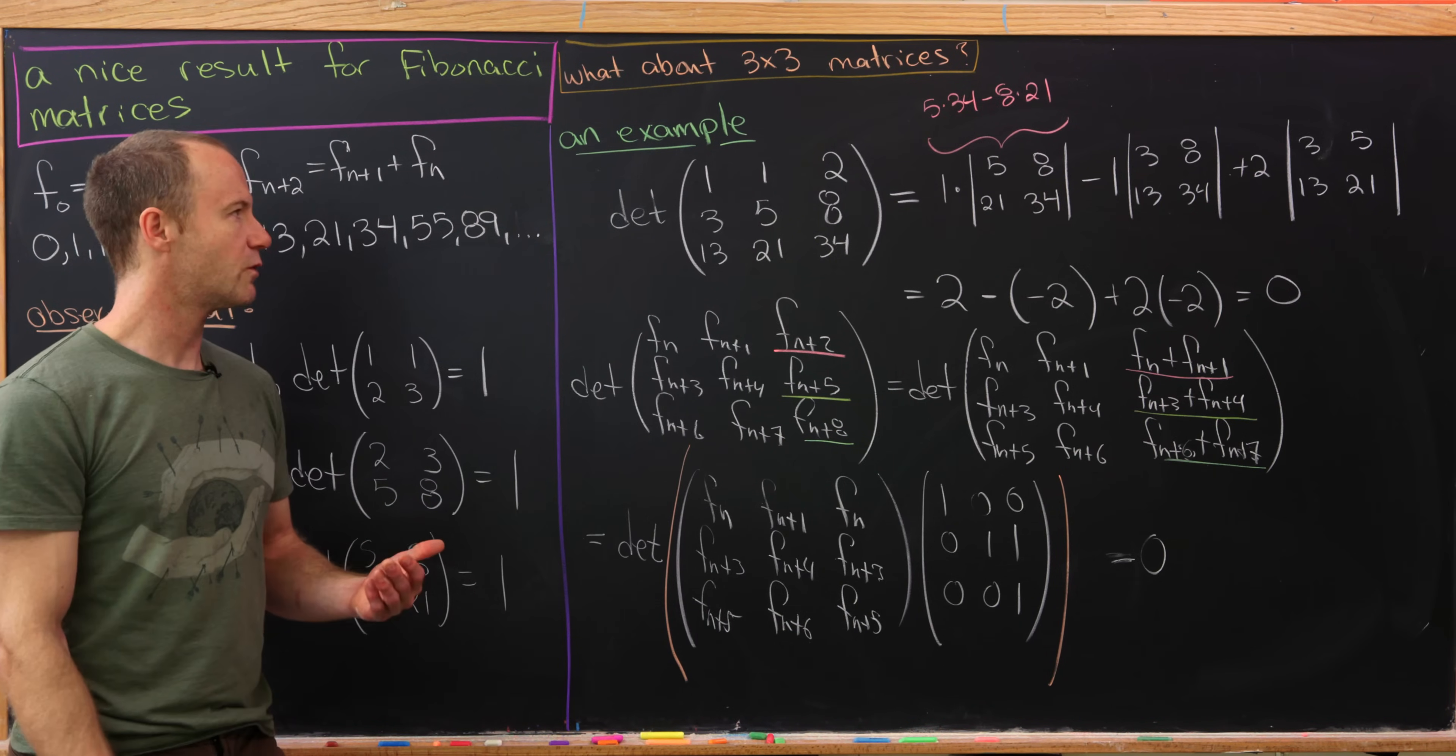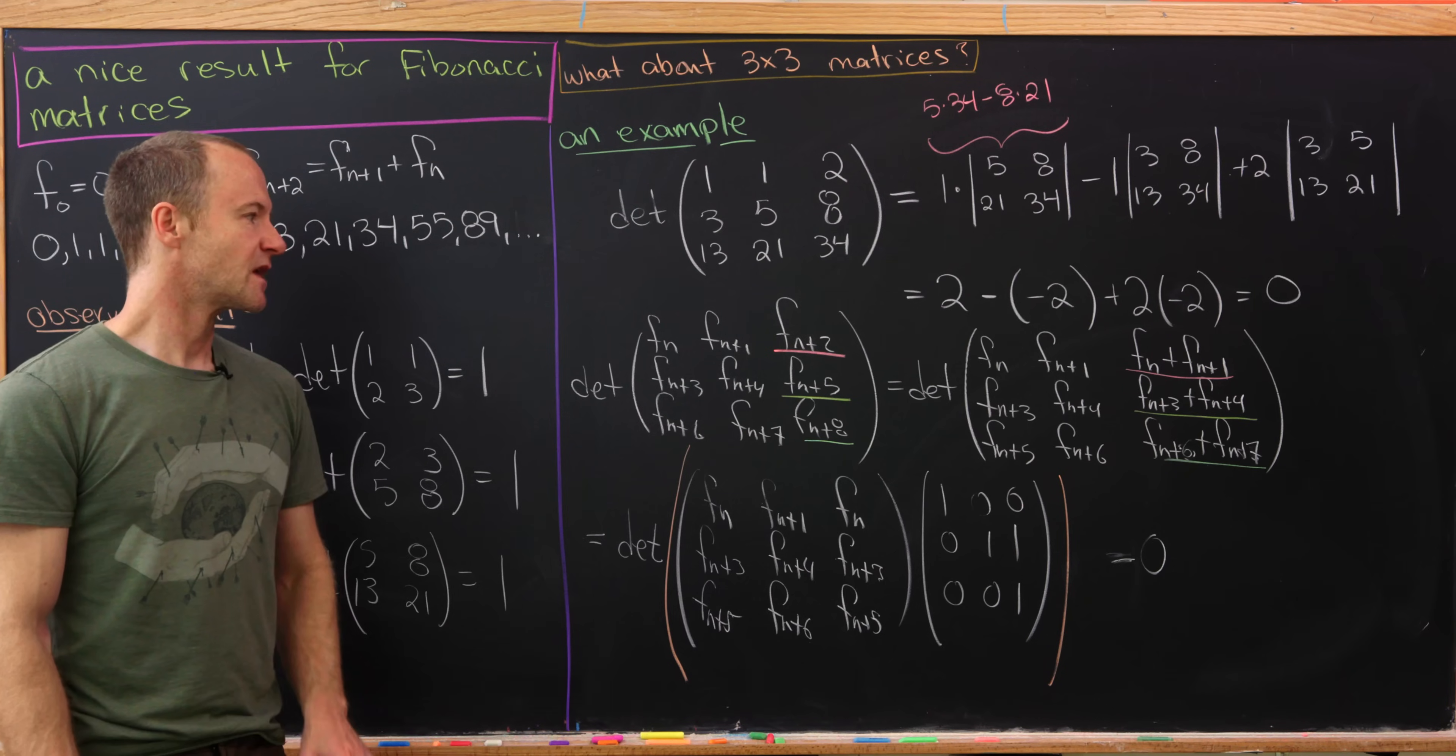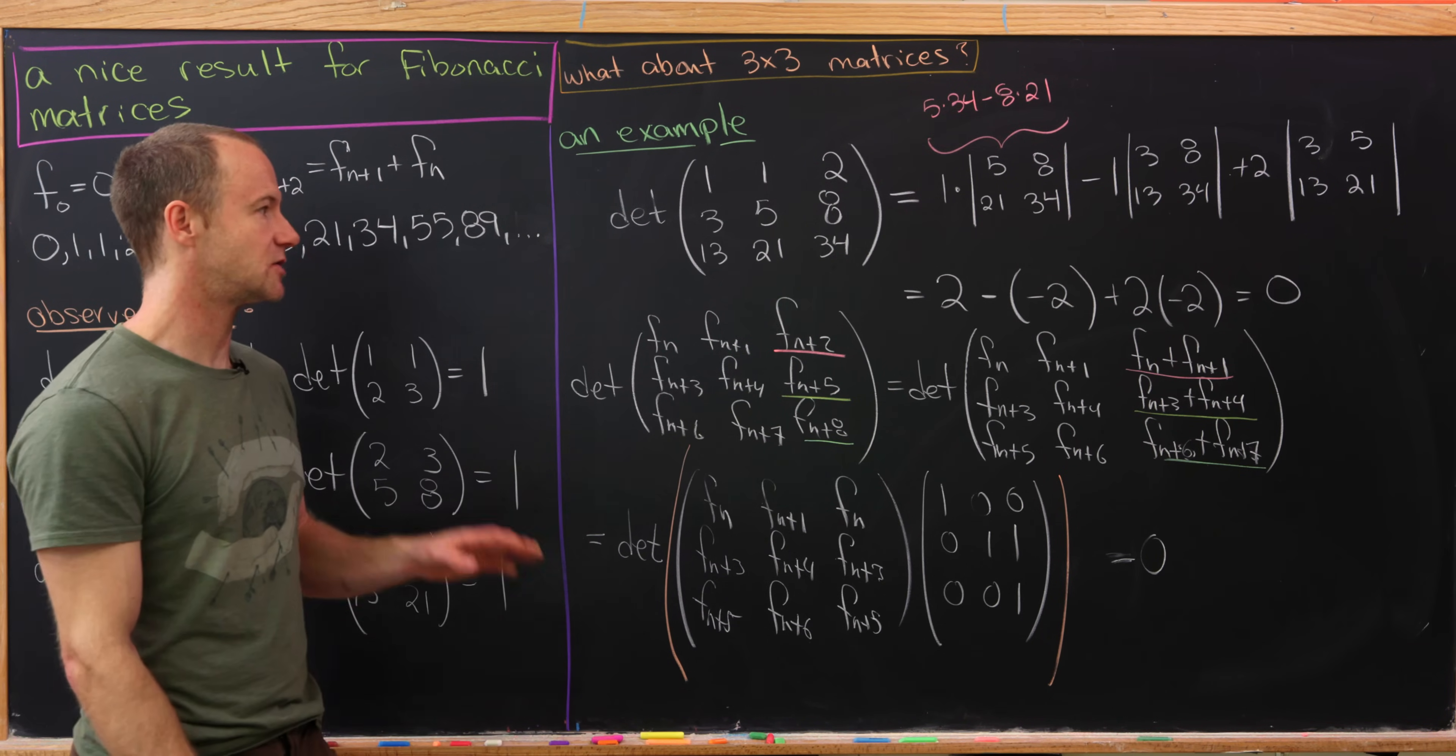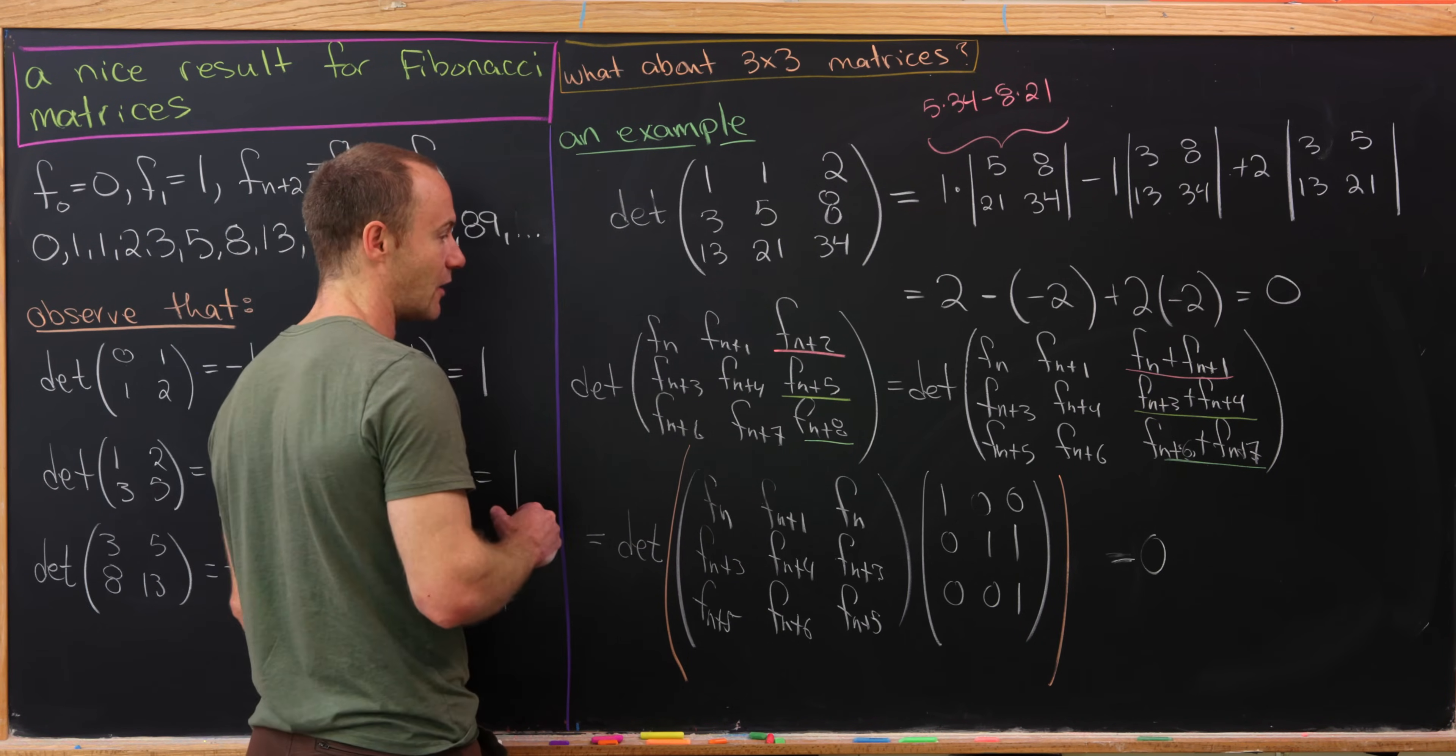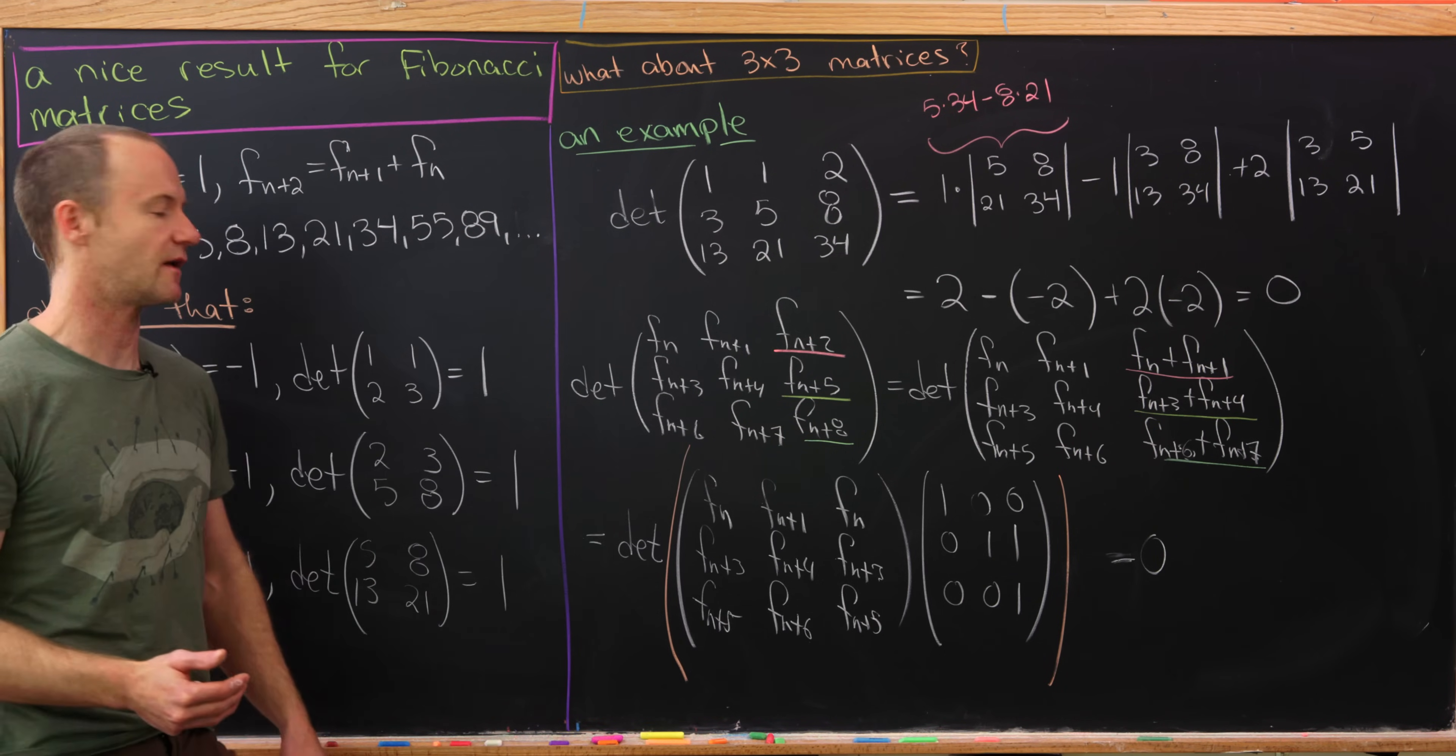And now you might say, well, what happens with a 4x4 matrix or a 5x5 matrix? But let's notice exactly the same thing will happen for a kxk matrix as long as k is bigger than 2. And that's because with this kind of layout, you'll always have a column be the sum of the previous two columns.